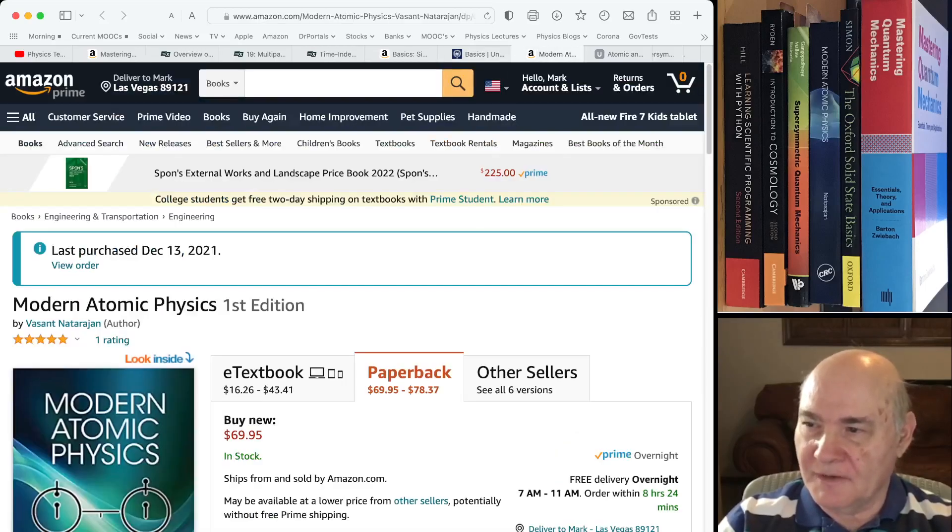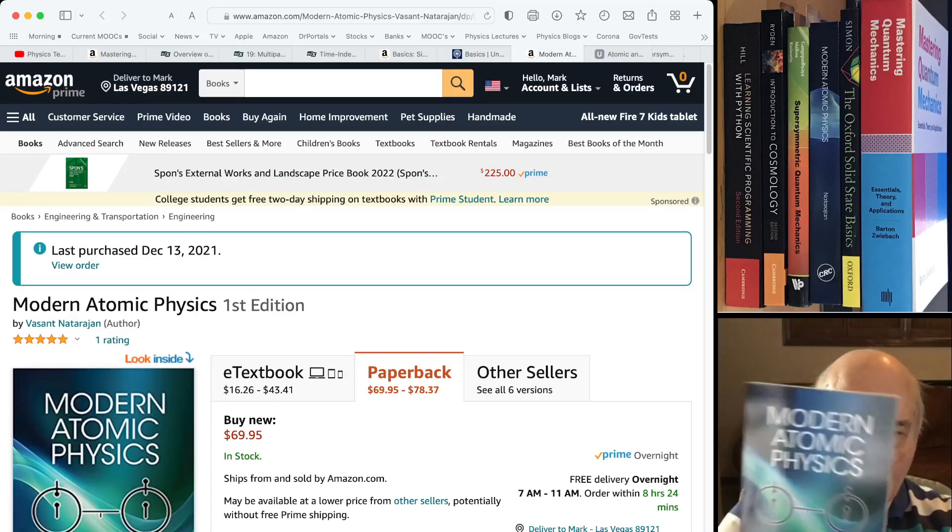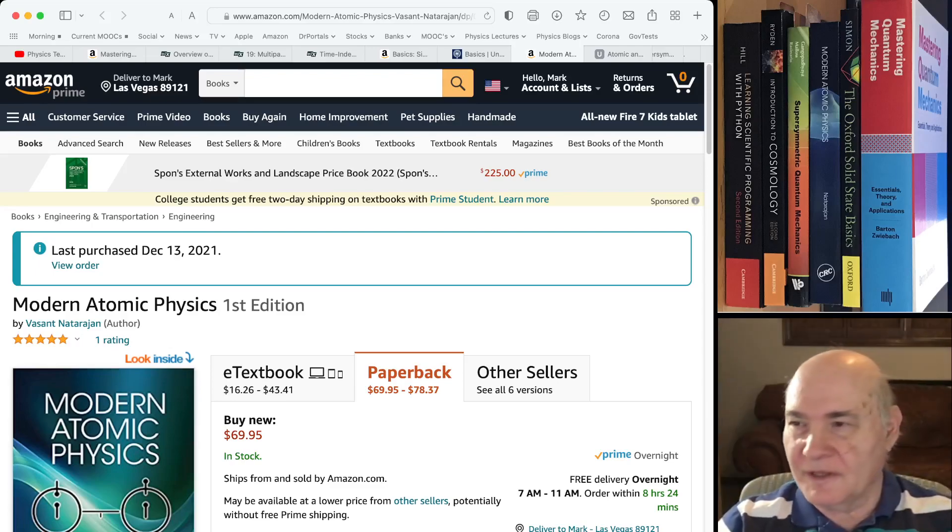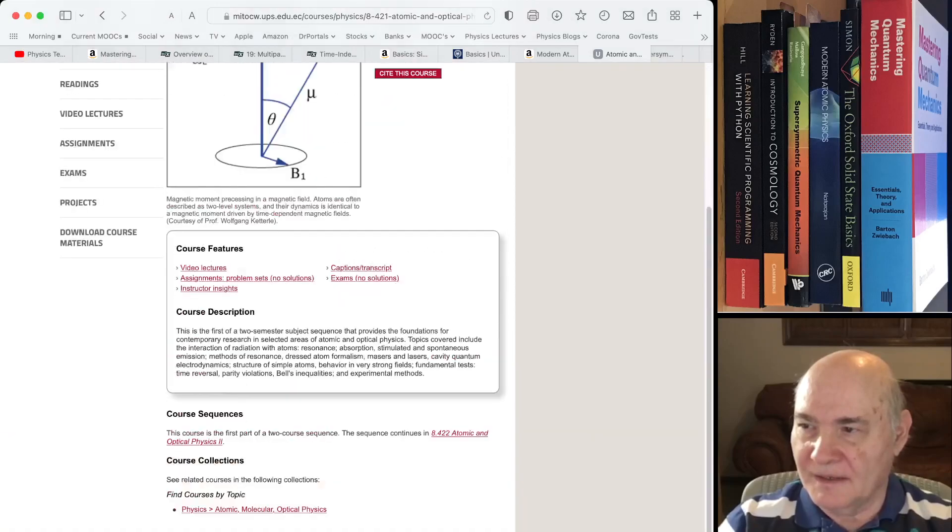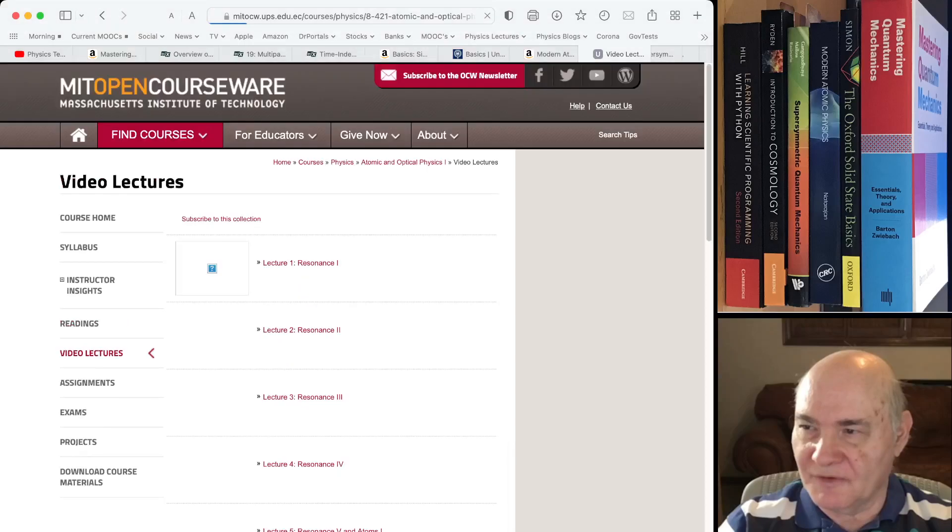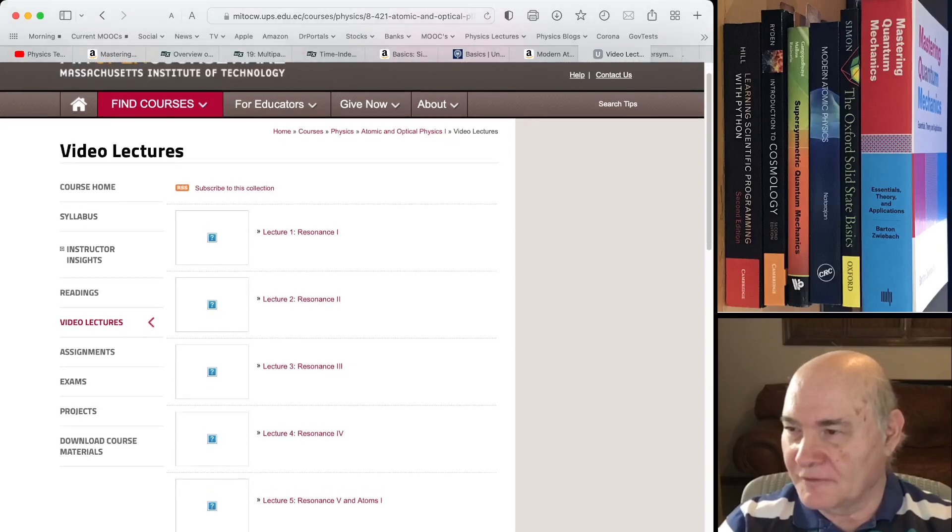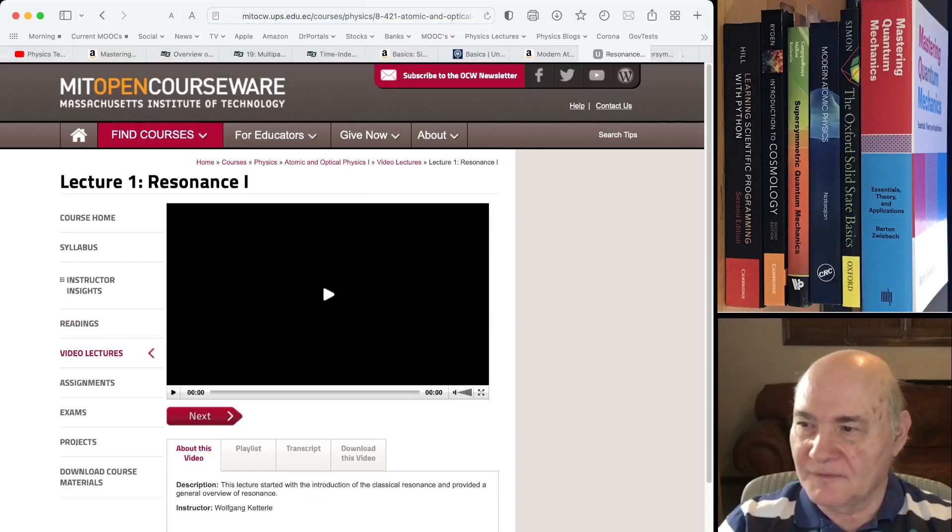Then the next book that I've recently purchased, modern atomic physics. A few years ago I took an atomic physics course it was on edX. It was like two of them and it was atomic and optical physics one and two. And I guess this is the MIT OCW site and the video lectures. I don't know if they're available anymore to tell you the truth. Let me see if they're available. Let's see if this works.